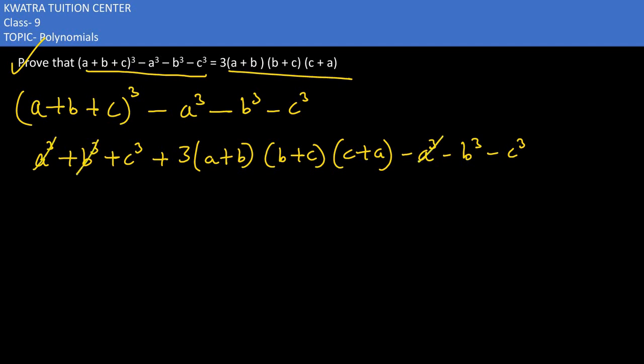a cube can cancel from a cube, b cube can cancel from b cube and we can cancel c cube with c cube. So what do we have is, we are only left with three times a plus b, b plus c and then we have c plus a.